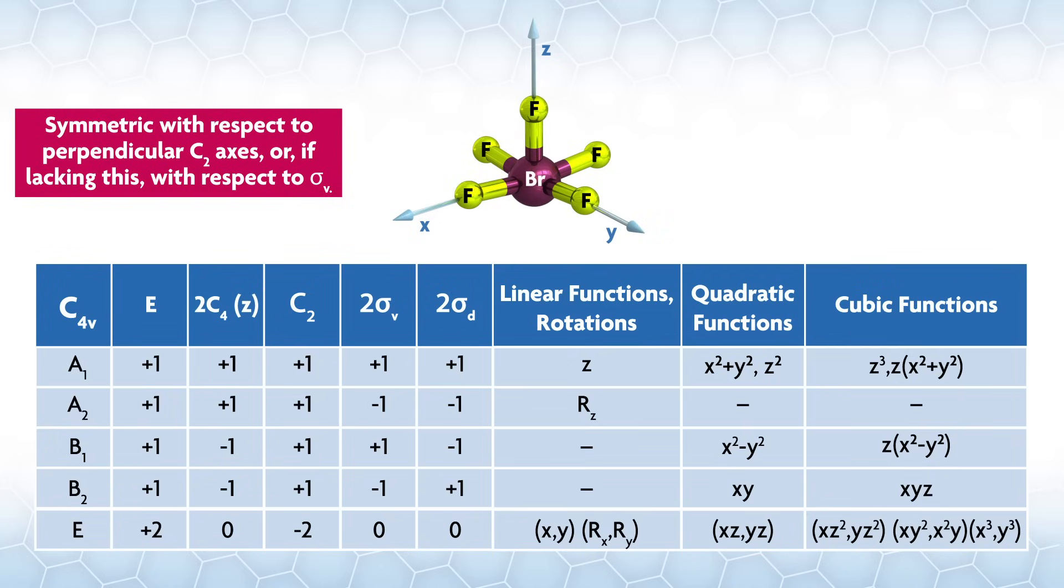A subscript 1 or 2 means that the representation is symmetric or anti-symmetric with respect to the perpendicular C2 axis, or, if lacking this, with respect to sigma v. Our point group is C4v, so there are no perpendicular C2 axes.